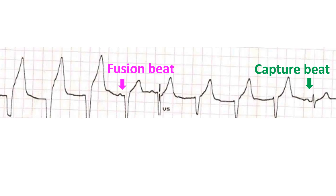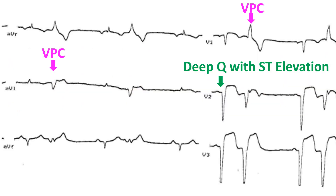The last beat is preceded by a P wave and has a narrow QRS, indicating that it is a capture beat. This ECG portion shows deep Q with ST elevation seen in V1 to V3, suggesting anterolateral myocardial infarction. Ventricular premature complexes are also seen in bigeminal pattern.